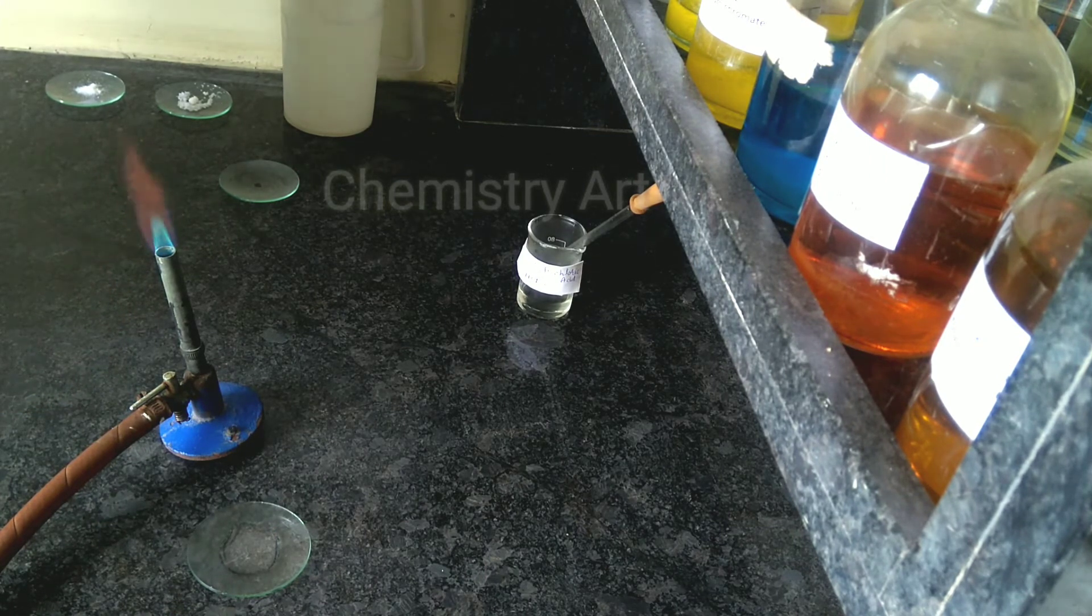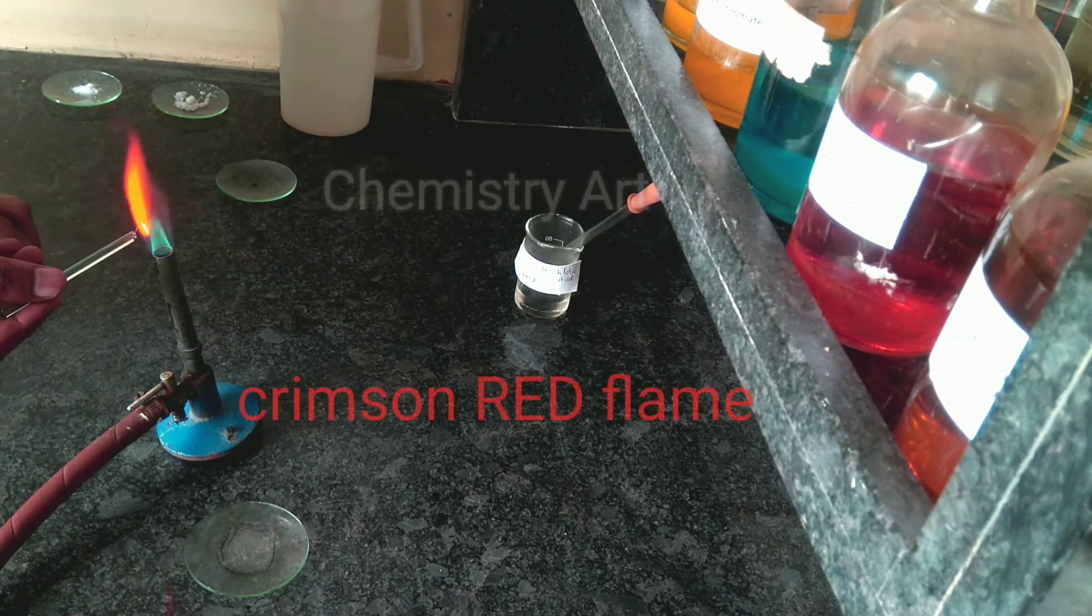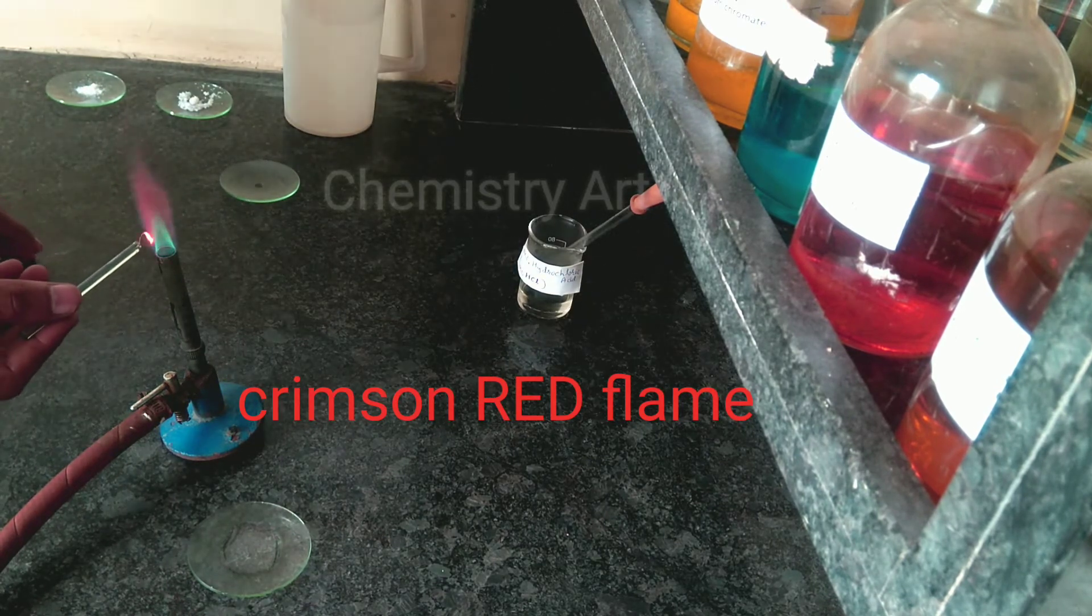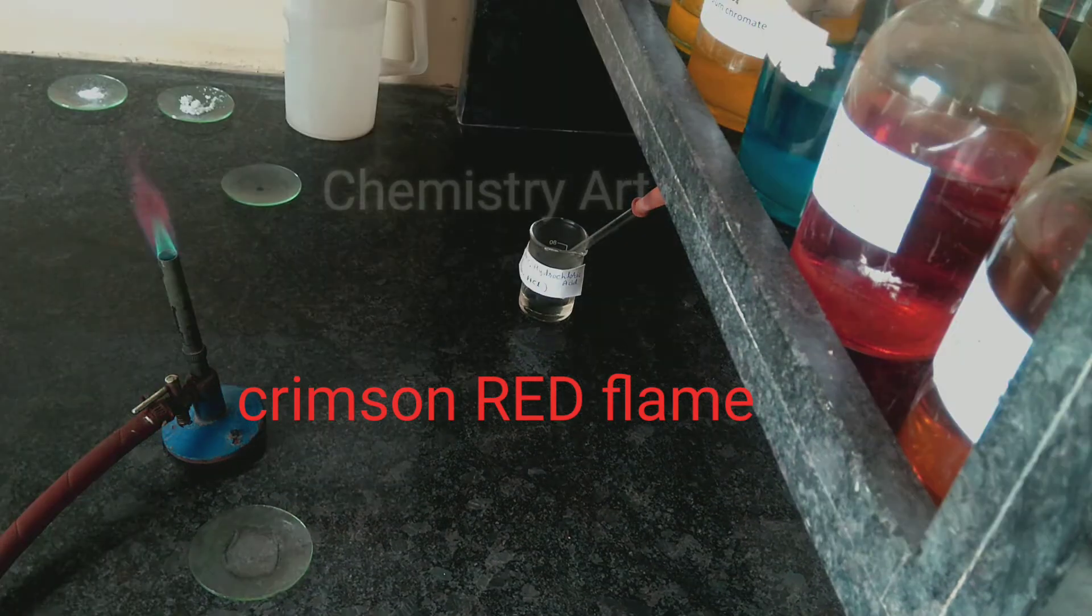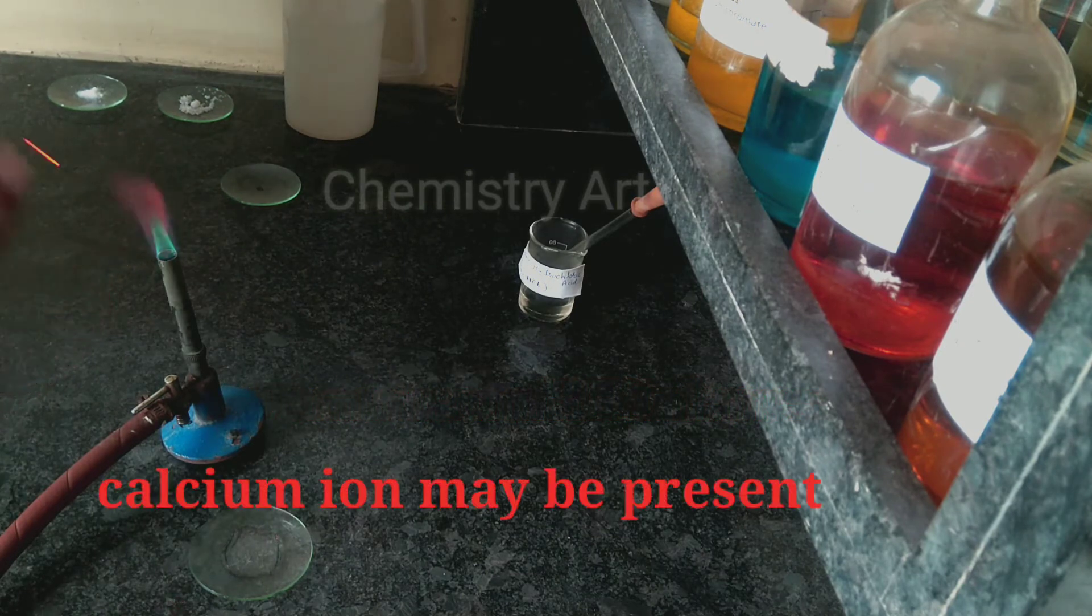Let me show you again. You can also use cobalt glass. Here it's a brick red color. From cobalt glass you can reduce the extra yellow flame. We are generally not considering the yellow flame.